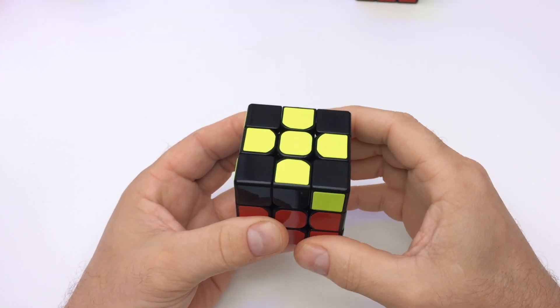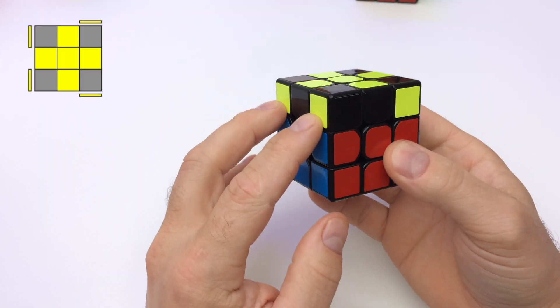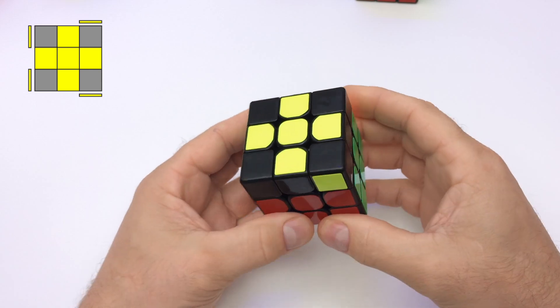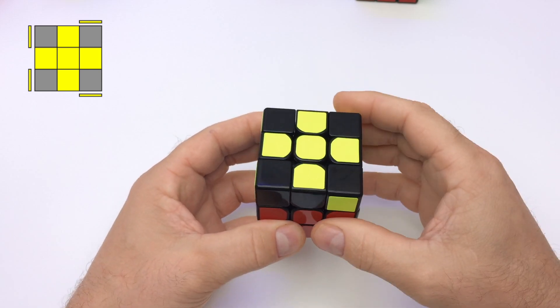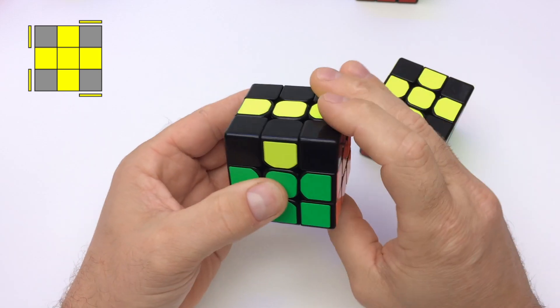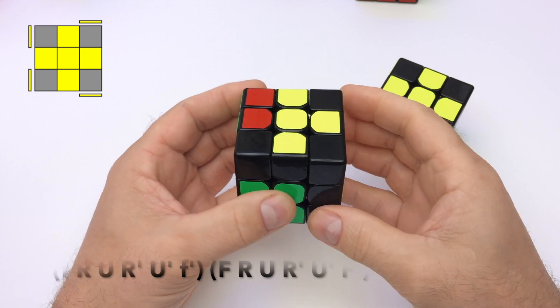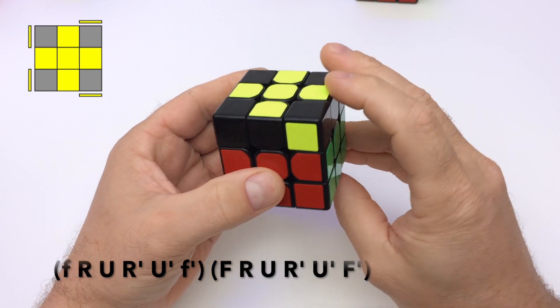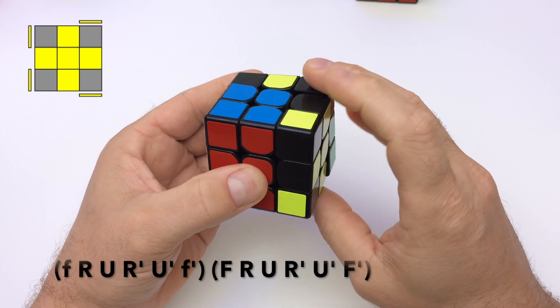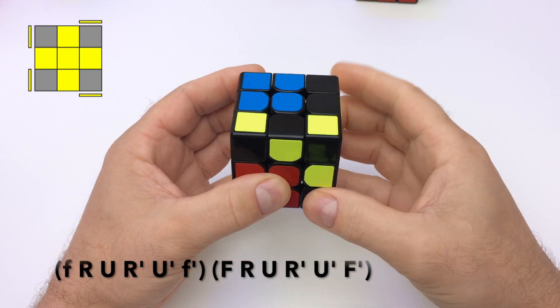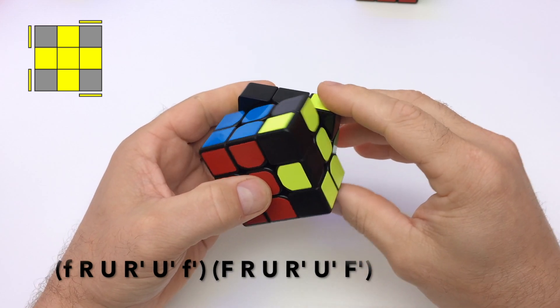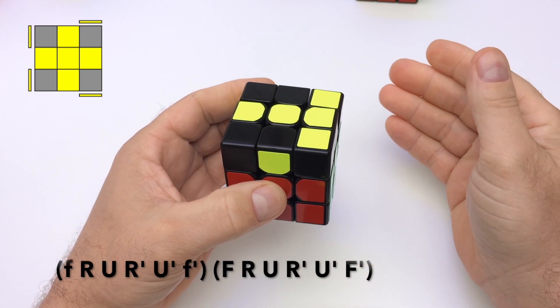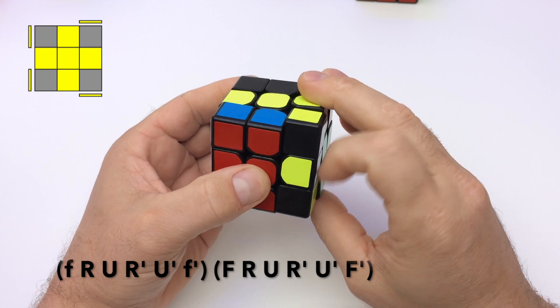So to solve no fish place the two yellow corners that are on the same side to the left and perform a slight variation of the yellow cross algorithm. Instead of front, right, up, right prime, up prime, front prime, we perform lowercase f which is double front, right, up, right prime, up prime, lowercase f prime, then we do our standard front, right, up, right prime, up prime, front prime.